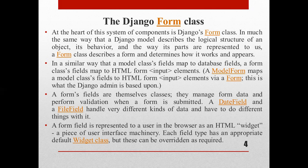Whenever we describe the Django model, it describes the logical structure of an object and its behavior. In a similar way that model class fields map to database fields, a form class fields map to HTML form input elements. A model form maps model class fields to HTML form input elements via a form.